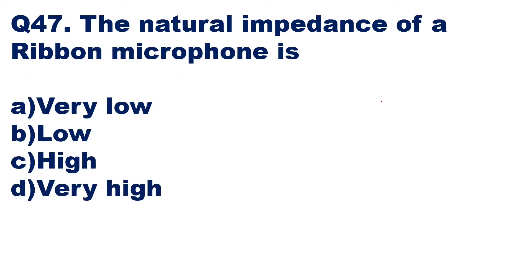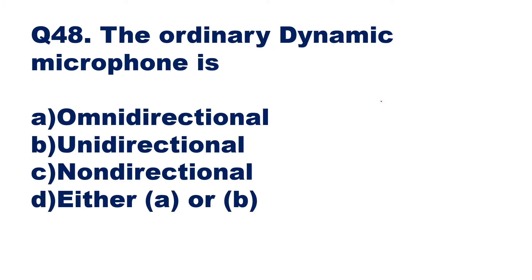Question 47: the natural impedance of a ribbon microphone. The feature of a ribbon microphone is that its natural impedance is very low — option A is the right answer. Question 48: the ordinary dynamic microphone is whether omnidirectional, unidirectional, or non-directional. The answer is non-directional — option C is the right answer.